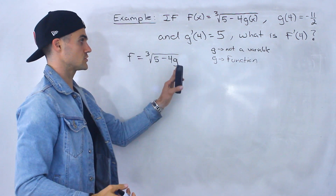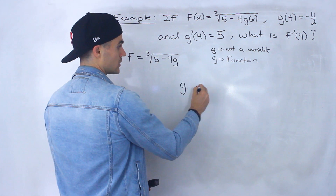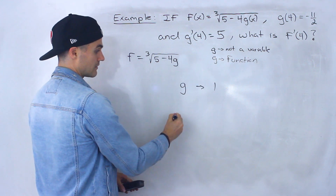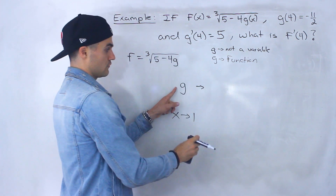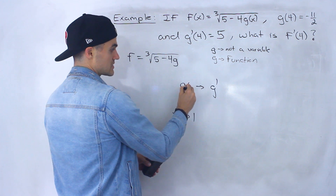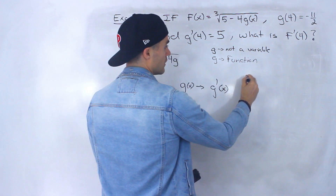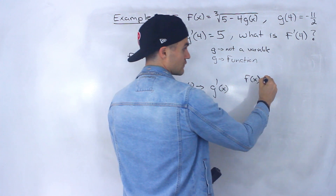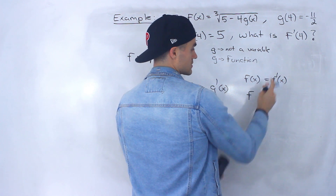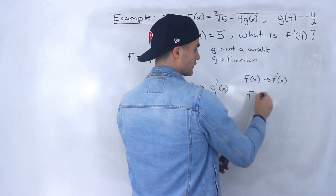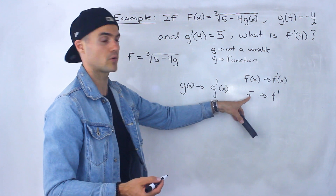Whenever we take the derivative of g, it wouldn't just be 1, because it's not a variable. If we had the derivative of x, that would be 1. But the derivative of the function g would be g prime, because this g is like g of x. So the derivative of g of x would be g prime of x. Same thing with f: the derivative of f of x is f prime of x.